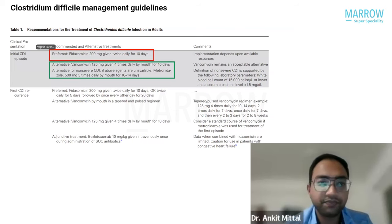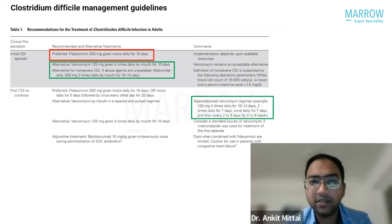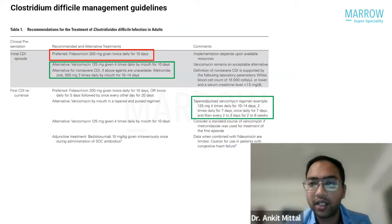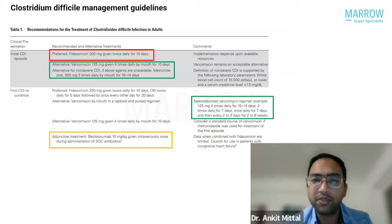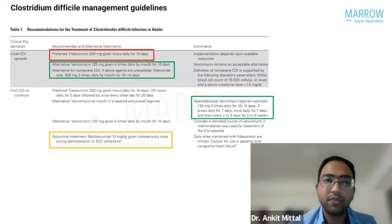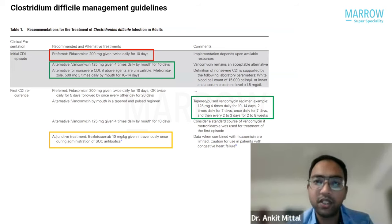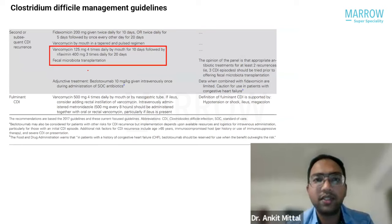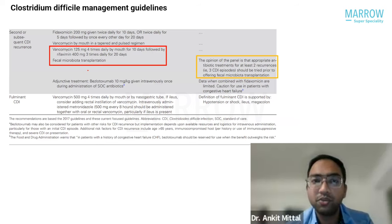For recurrence, we repeat the same treatment course, but often a tapered and pulse regimen of vancomycin is used. Another important MCQ point is the role of bezlotoxumab — it's an antibody against toxin B, used as adjunctive treatment alongside antibiotic therapy for C. diff infection, not as the sole treatment.